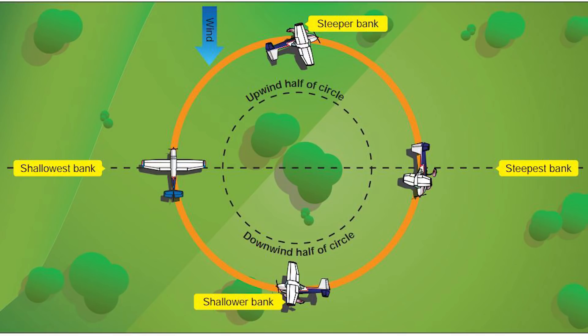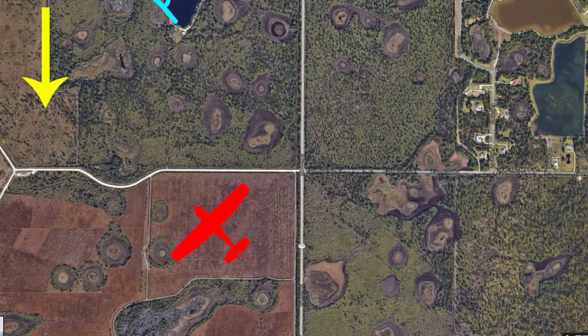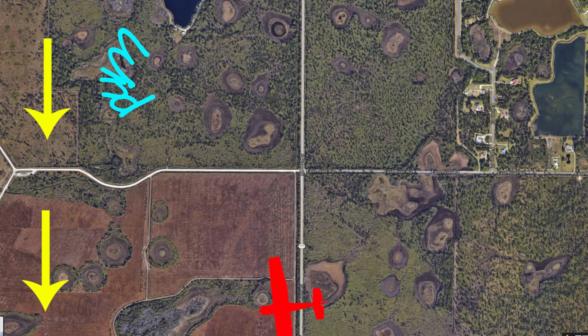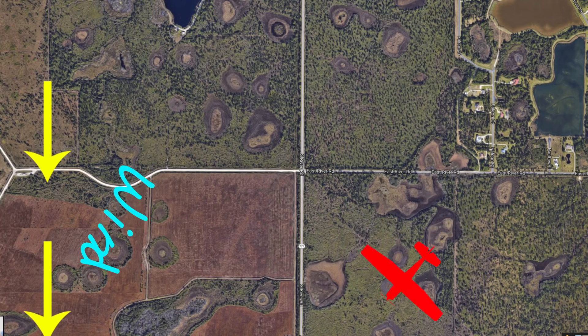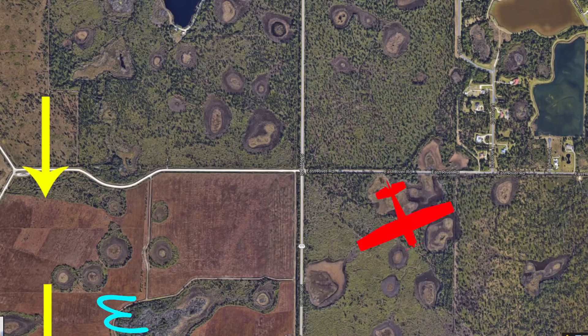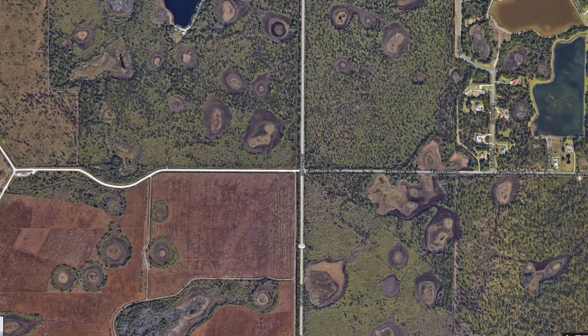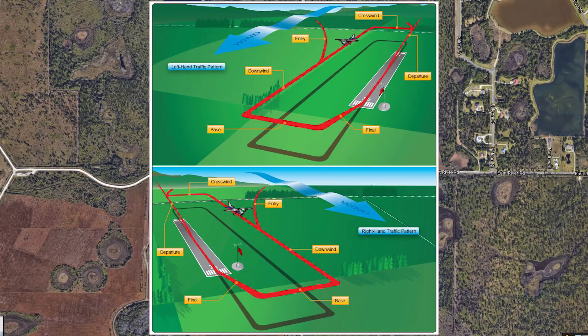To account for the wind that's trying to blow you away from the point — if we were to simply circle a point and not change our bank angle ever, the airplane would be drifting with the wind and you'd eventually get blown away from that point. We're trying to control the airplane in reference to what's on the ground, because ultimately you're going to be making turns in the traffic pattern and trying to get lined up with the runway, and the wind up high is going to be affecting you in some way that you'll have to account for.